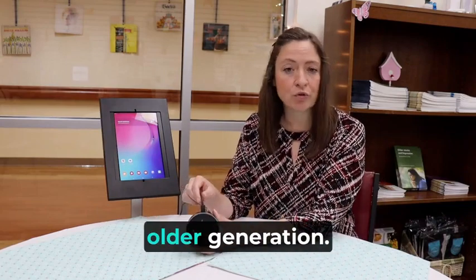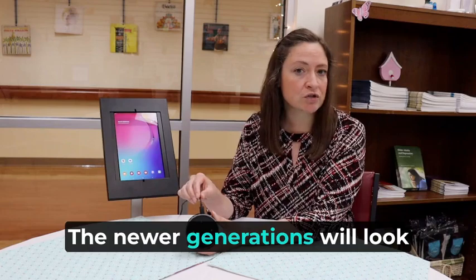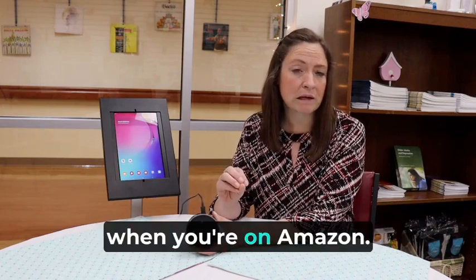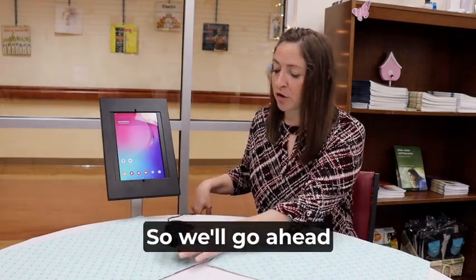Now, this Echo Dot is an older generation. The newer generations will look like a sphere or like a globe when you're on Amazon. So we'll go ahead and get started.